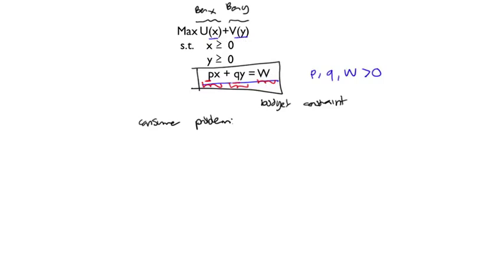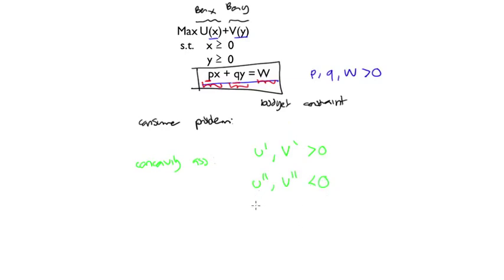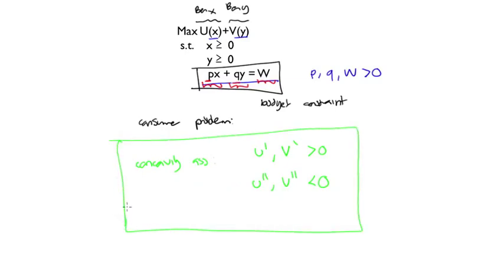In all of the problems that we're going to study in the course that have this form, we're going to impose concavity assumptions that look like this: the marginal benefit for both goods is greater than zero, and the second derivative for both goods is less than zero. In other words, the additional benefit that each unit of good x or y generates at the margin goes down as x and y increase.